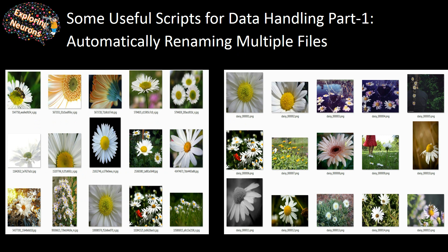Before going to that, I'd also encourage you to go watch the video I made on how you can automatically rename multiple files in a proper sequence — like on the left it's some random name, but on the right you can see it's in proper sequence: daisy_001, daisy_002. Renaming in this format makes it easier to write code to deal with these images, whether to convert them into videos or to do any kind of processing. I'll provide the link for that video.